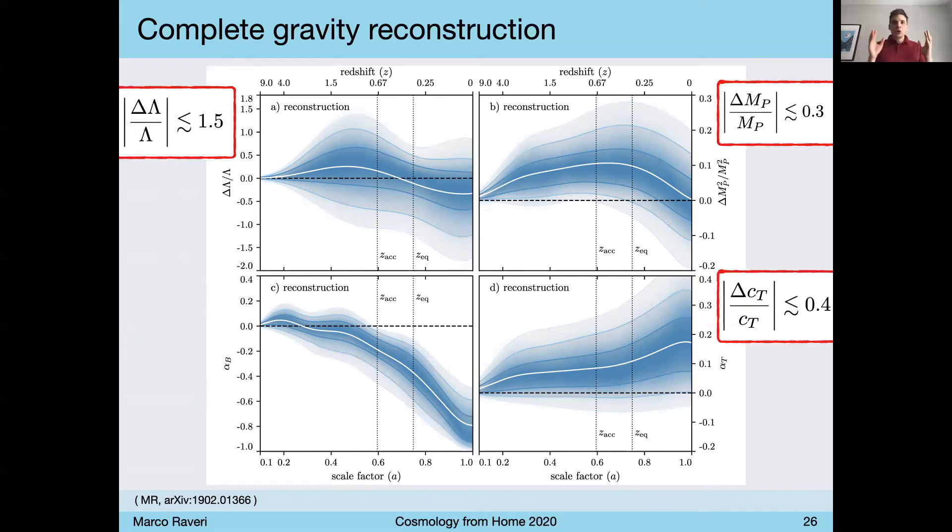The first aspect that I want to emphasize is that we have five functions of time. One of them is unconstrained, so I'm only showing four. Then the constraints that we have are all order 10%. 40% for the speed of gravitational waves, 30% for the Planck mass, and 100% for the cosmological constant itself. And these are all relative numbers. So, while we used to think that we have very strong constraints on these type of models, as we open up time dependencies as three degrees of freedom, then we see that that's not actually the case.